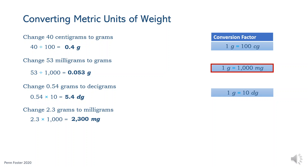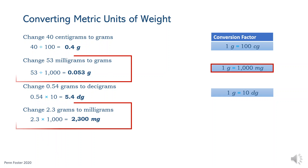Compare this last problem with the second weight problem. The units in both problems are the same — grams and milligrams — and the conversion factor used is also the same. However, the conversion directions are opposite, which explains using opposite operations to calculate weight in the desired units.